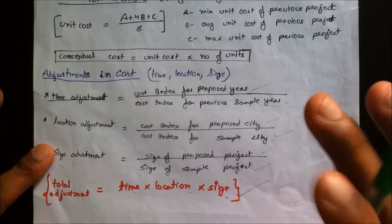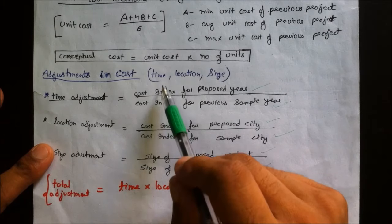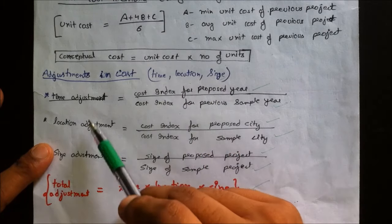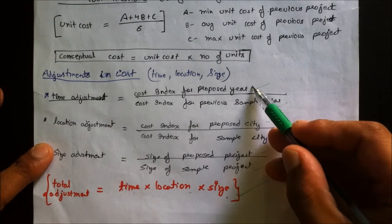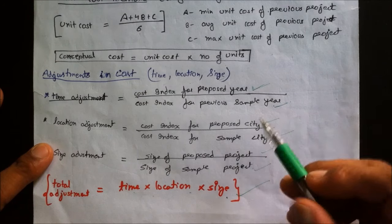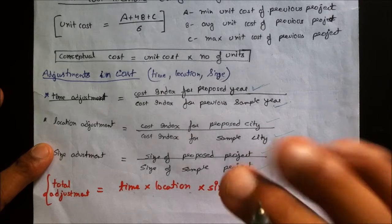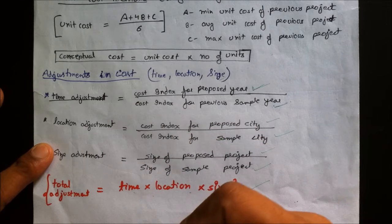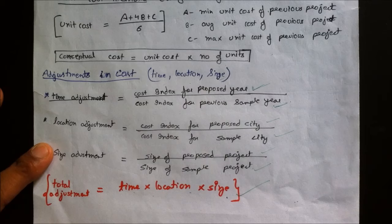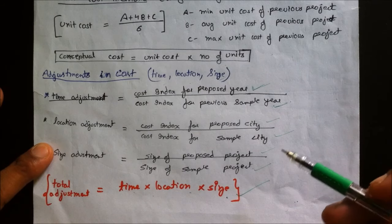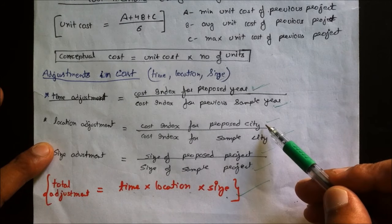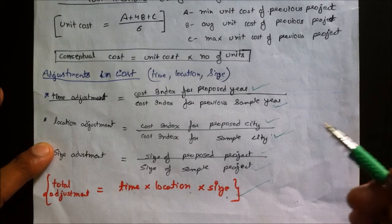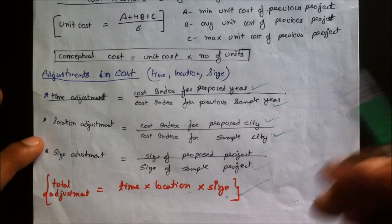There are correction factors applied to cost estimates: time factor, location factor, and size factor. For time adjustment, if a house was built 10 years ago, we use cost indices — dividing the current cost index by the old cost index gives the time adjustment factor. For location adjustment, if a house was built in Mumbai and we want to build in Delhi, we divide the cost index of the proposed city by the cost index of the sample city.